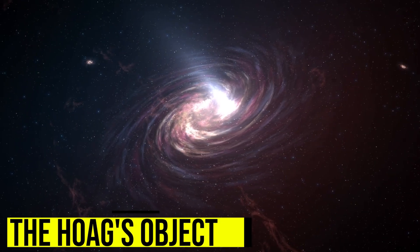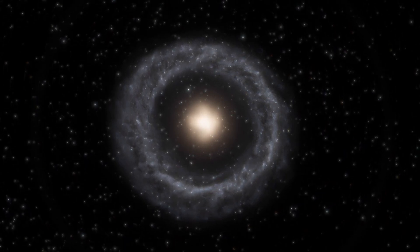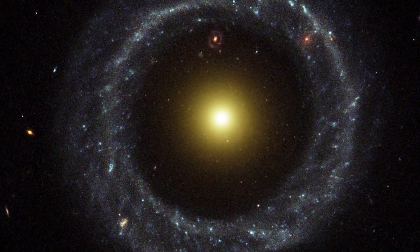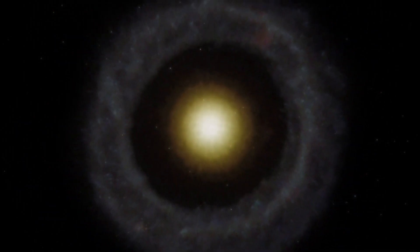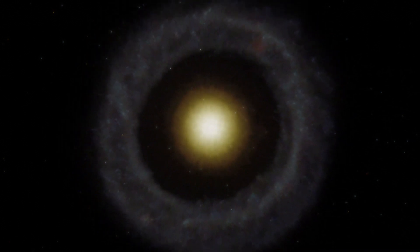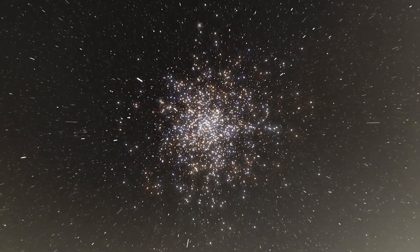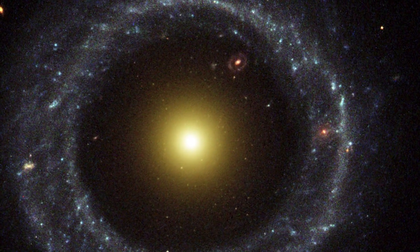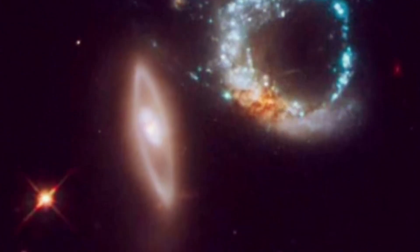The Hoag's Object is one of the most unusual galaxies ever discovered. It is a rare example of a ring galaxy, meaning that its stars and gas are arranged in a ring shape, with a void in the center. The ring is made up of bright blue stars, while the void contains a collection of older, reddish stars. The reason for the formation of the ring is not yet fully understood, and astronomers continue to study this galaxy to learn more about its properties.